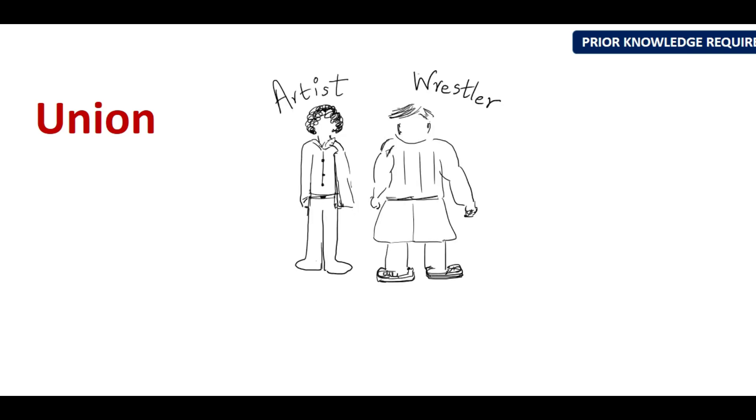We will start with the term union. If you have two sets of data which includes a group of artists and a group of wrestlers, then if you are asked to find the union, it just means together. So the total of both the artist and the wrestler. So that is the meaning of union, together.